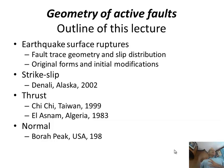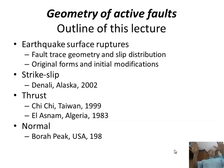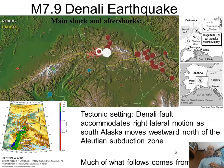Here are some examples — mostly pictures and a tour of strike-slip faults. We'll do the Denali earthquake from 2002 in Alaska, a little bit of Chi-Chi for thrusting, and then El Aznam, the famous thrust fault earthquake in Algeria — kind of a blind rupture that barely came to the surface. And then the Borah Peak normal fault earthquake from 1983.